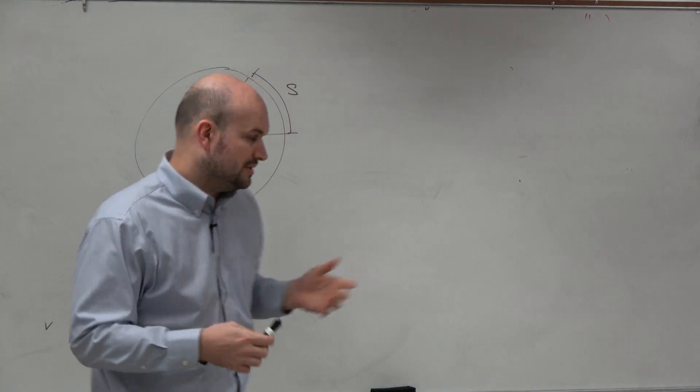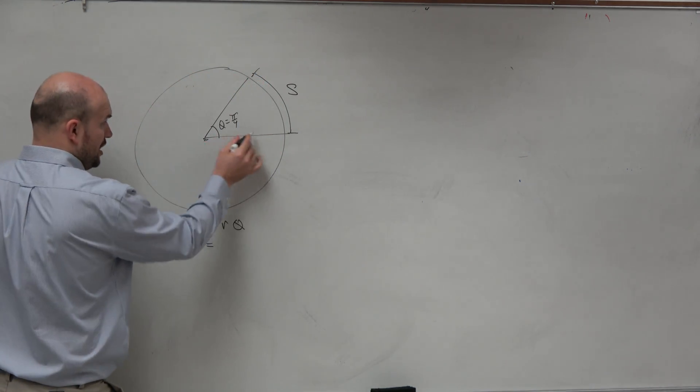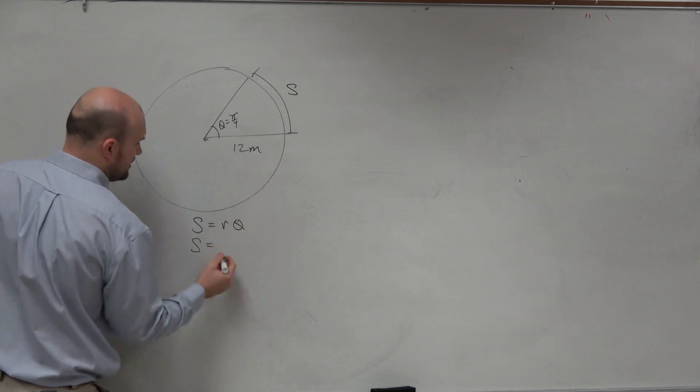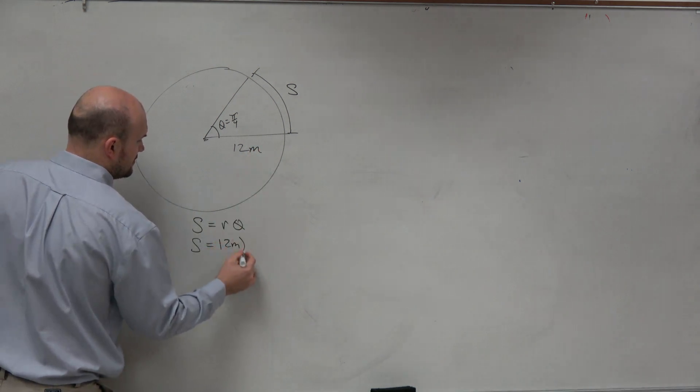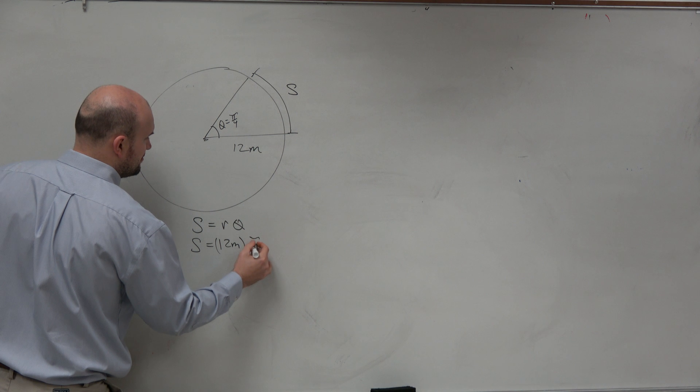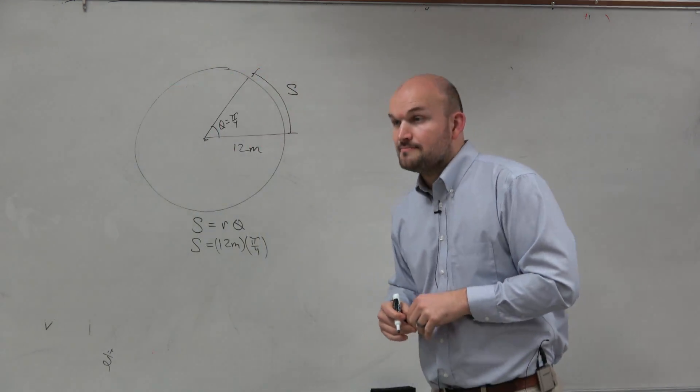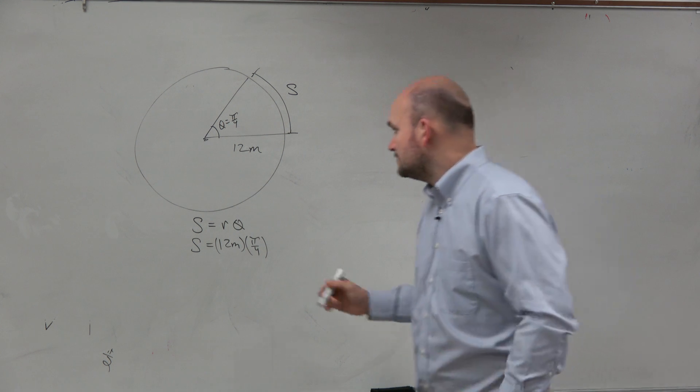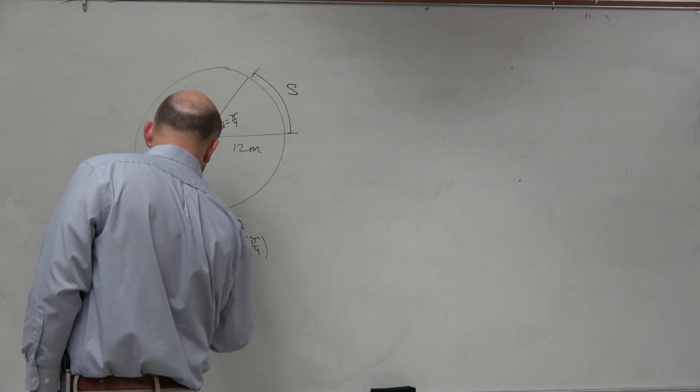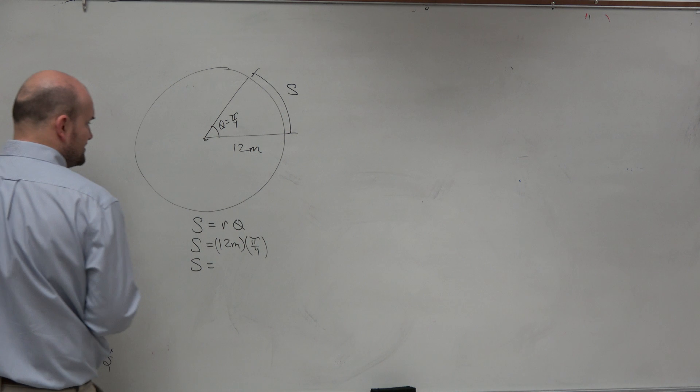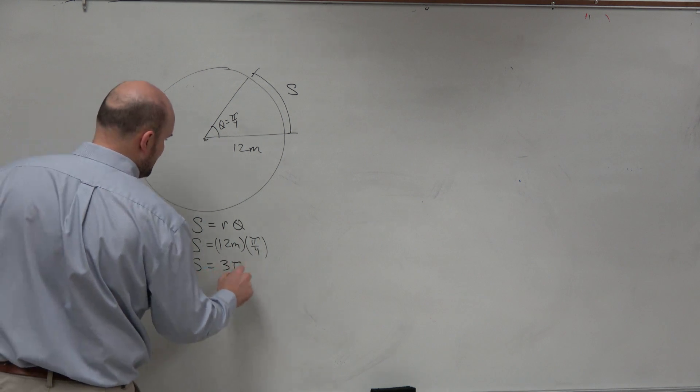Now, in this case, all we're simply going to do to find s is take our—whoops, I'm sorry, this is 12 meters—12 meters times our theta, which is pi over 4. So if we have 12 meters times pi over 4, that equals 3 pi meters.